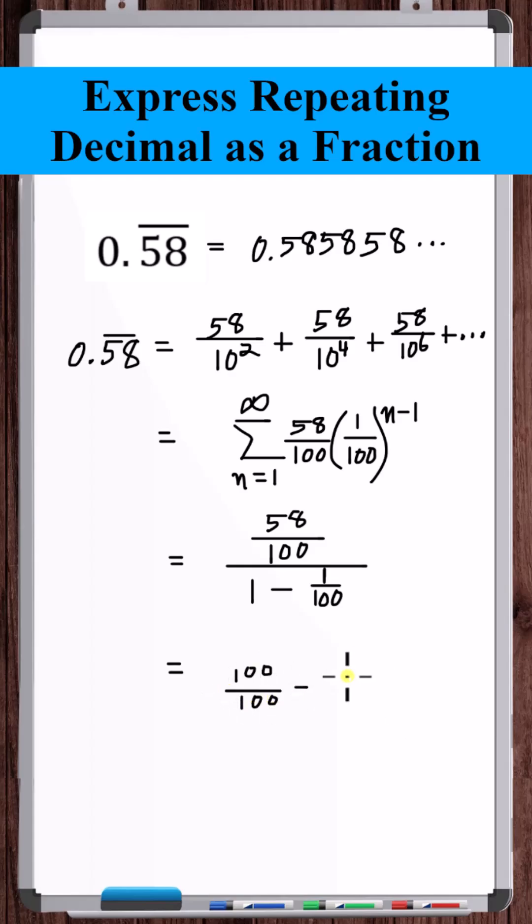Simplifying. And there we go. 0.58 repeating is exactly equal to 58 divided by 99.